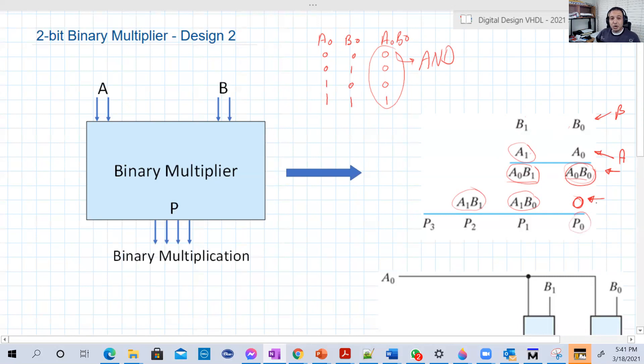A0 B0 plus 0, it's just adding, binary addition will give you P0. So P0 is basically A0 B0. You don't need to make addition here, you all the time have 0, so P0 is basically A0 B0 all the time.